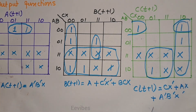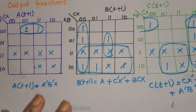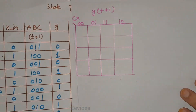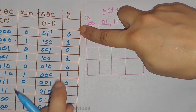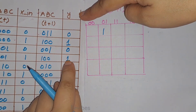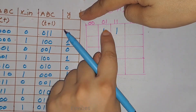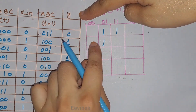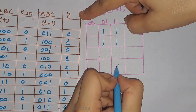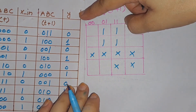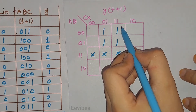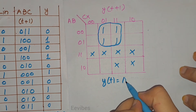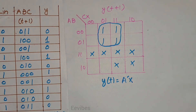The last function to determine is Y(t). The output function Y is 1 for minterms 1, 5, and 7, with don't-care conditions for minterms 10 through 15. Combining these four boxes in the K-map, the output function for Y(t) is equal to A-complement · X.